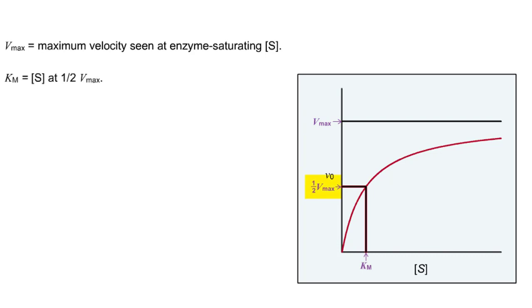Km is a lumped rate constant, incorporating all the rate constants for ES and P formation: K1, K-1, and K2. It is equal to the substrate concentration that gives one-half saturation of the enzyme. It is therefore also equal to the substrate concentration at one-half the Vmax.